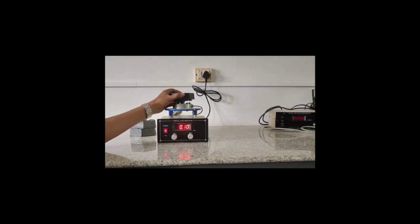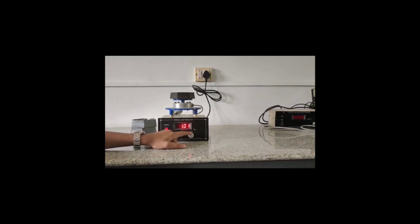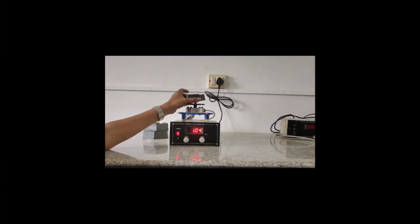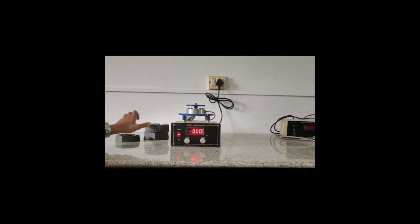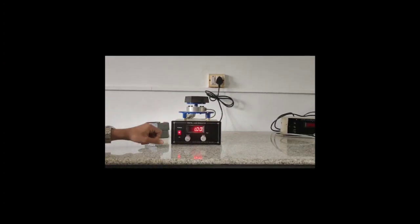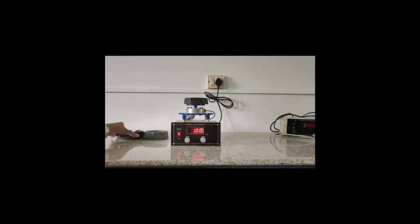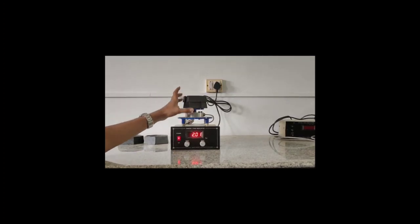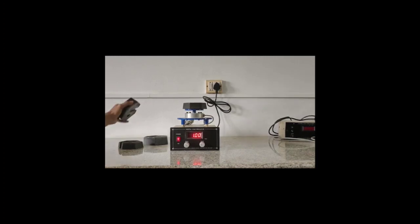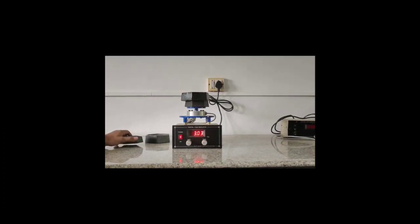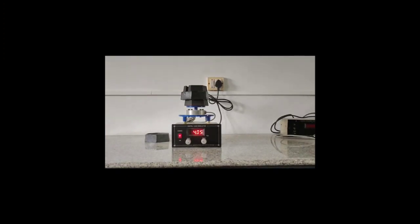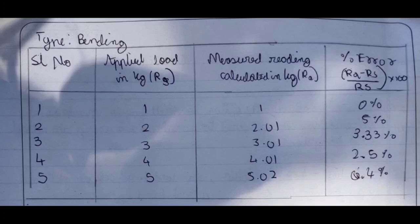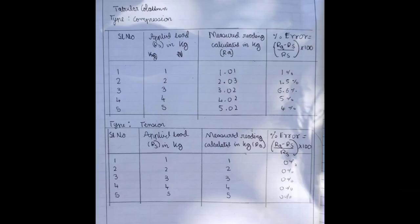Next we add a weight of 1 kg and adjust the span. Now we start with the experiment. It shows 0 kg, we add 1 kg and take down the reading, then add another kg. We continue taking readings for up to 5 kg. The given values are taken down in the following table and the error is calculated.